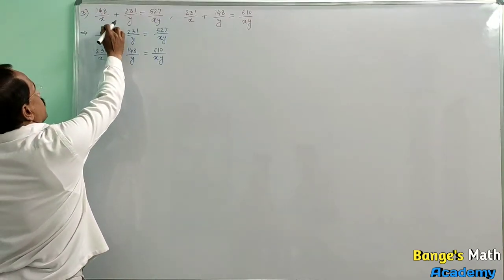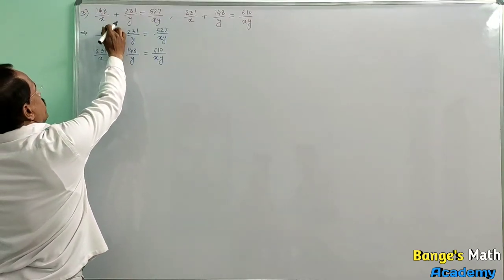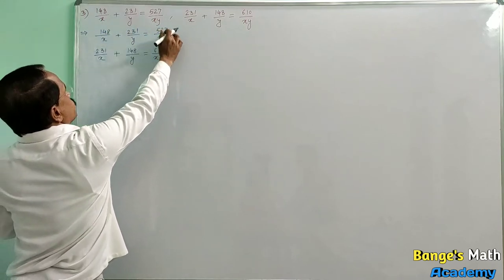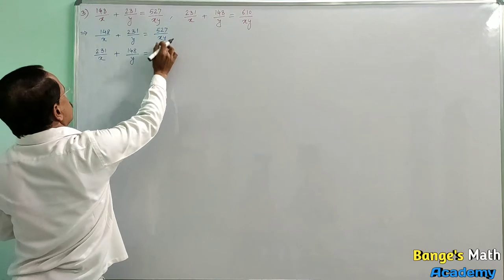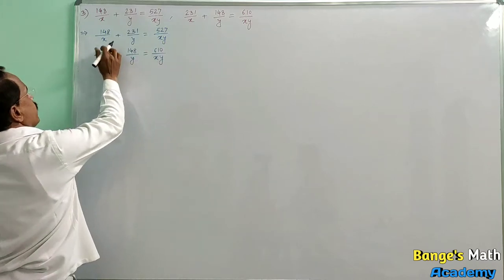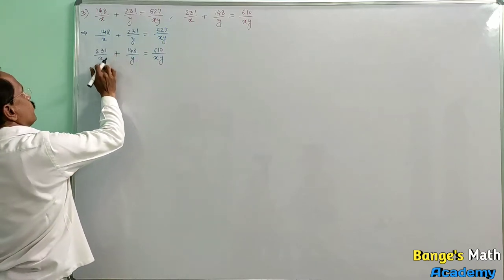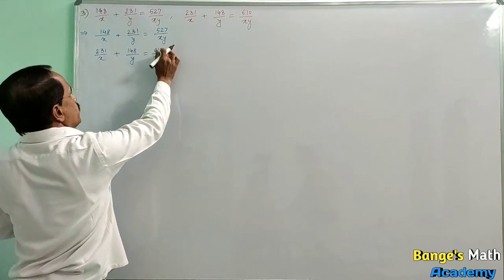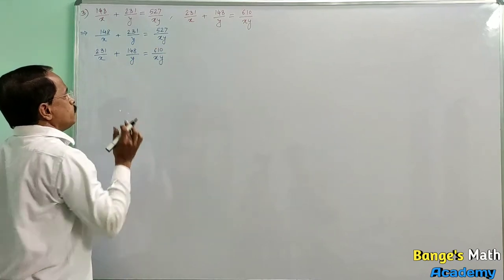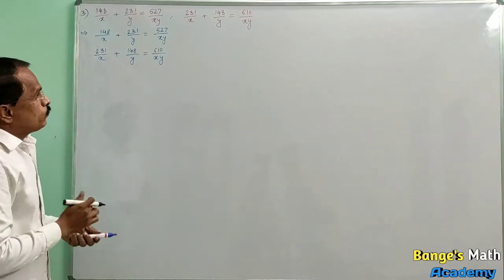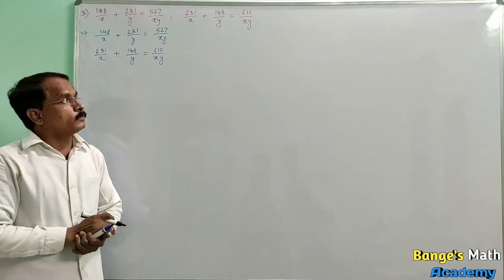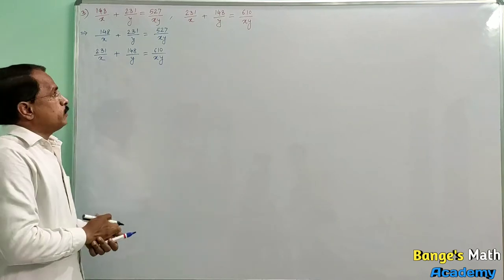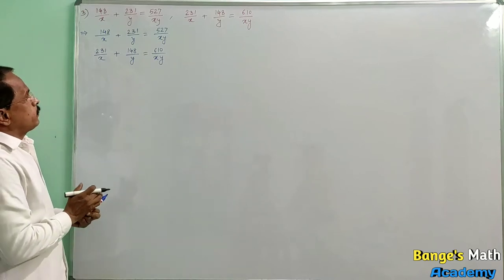Third example: 148 upon x plus 231 upon y is equal to 527 upon xy, and 231 upon x plus 148 upon y is equal to 610 upon xy. We have to find the solutions of these simultaneous equations. First, simplify the given equations.